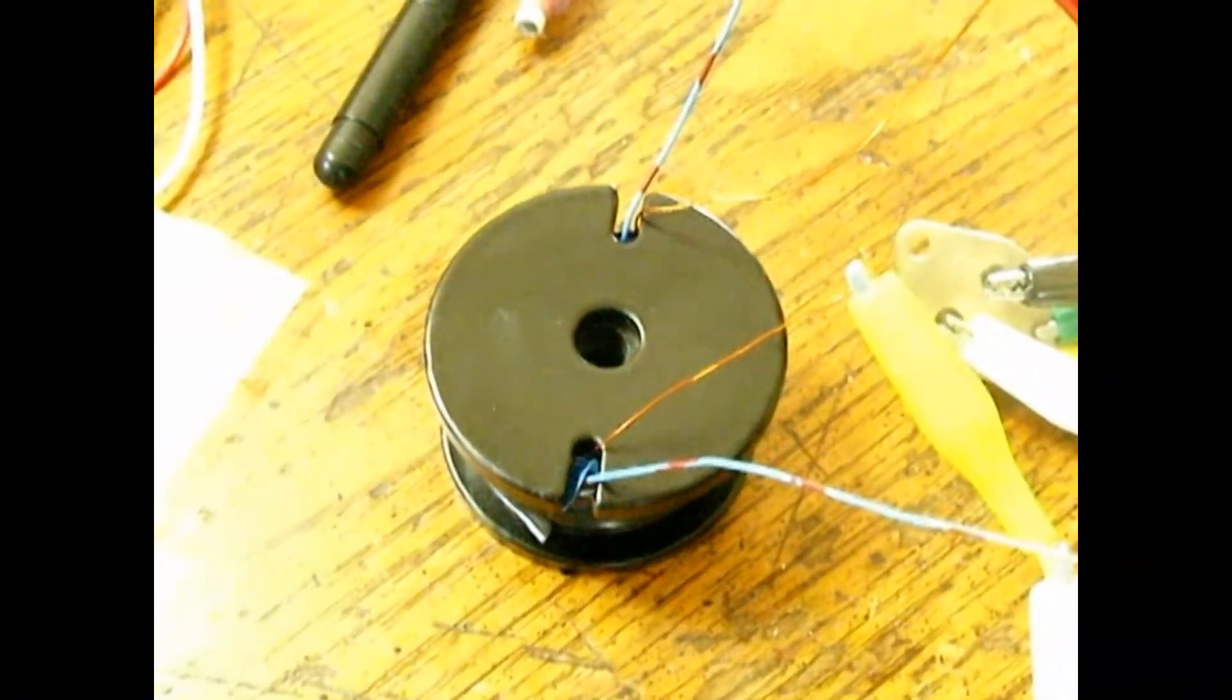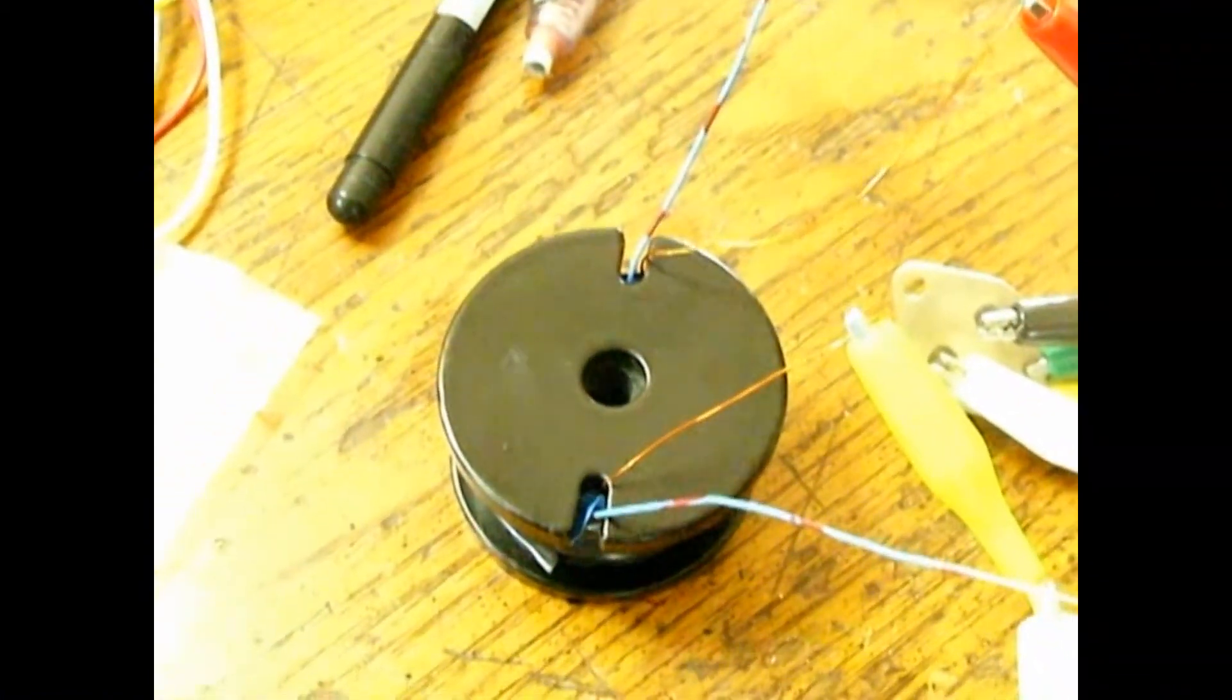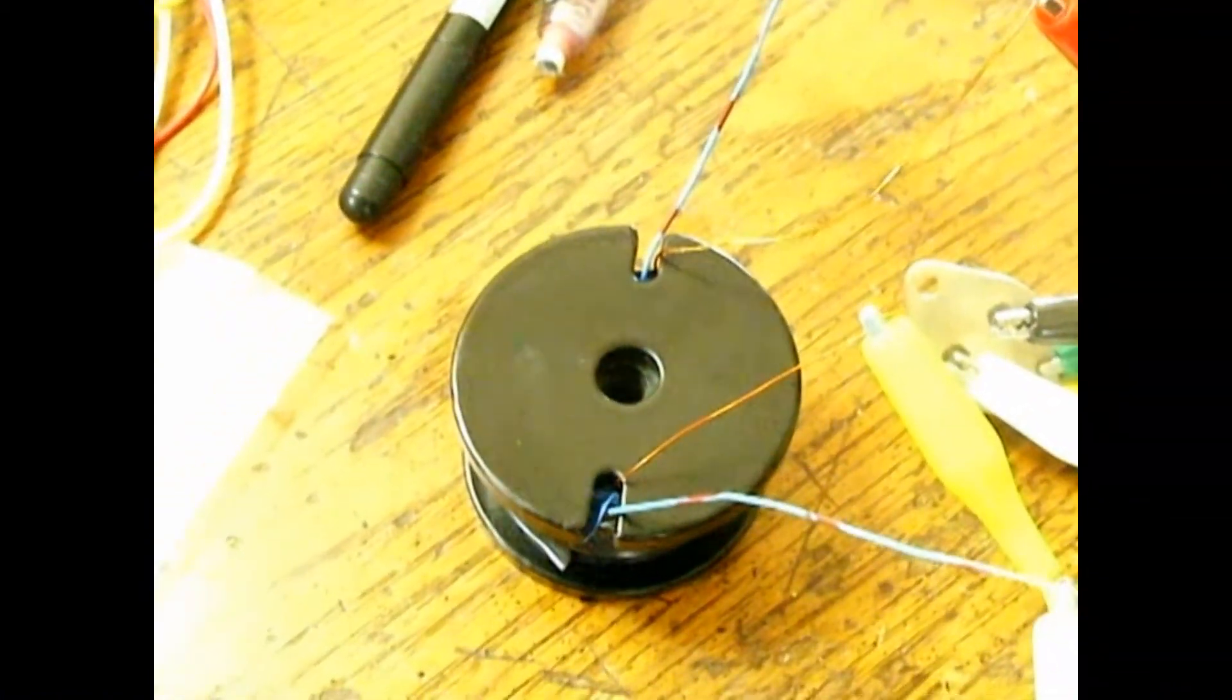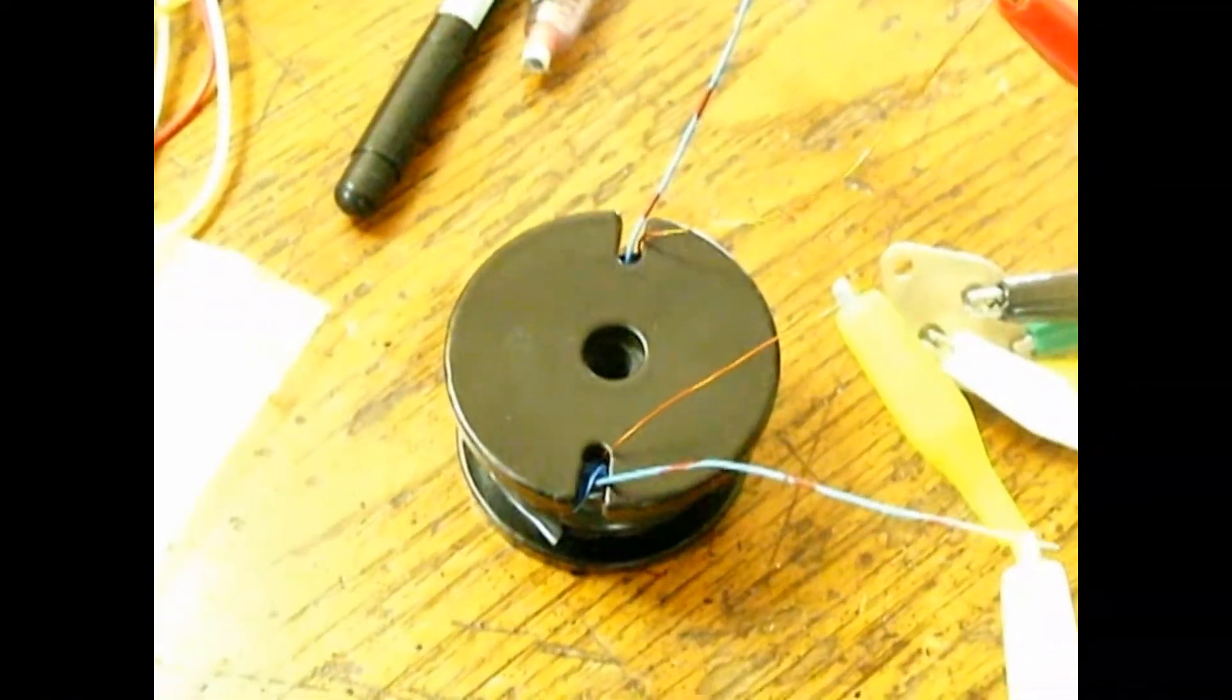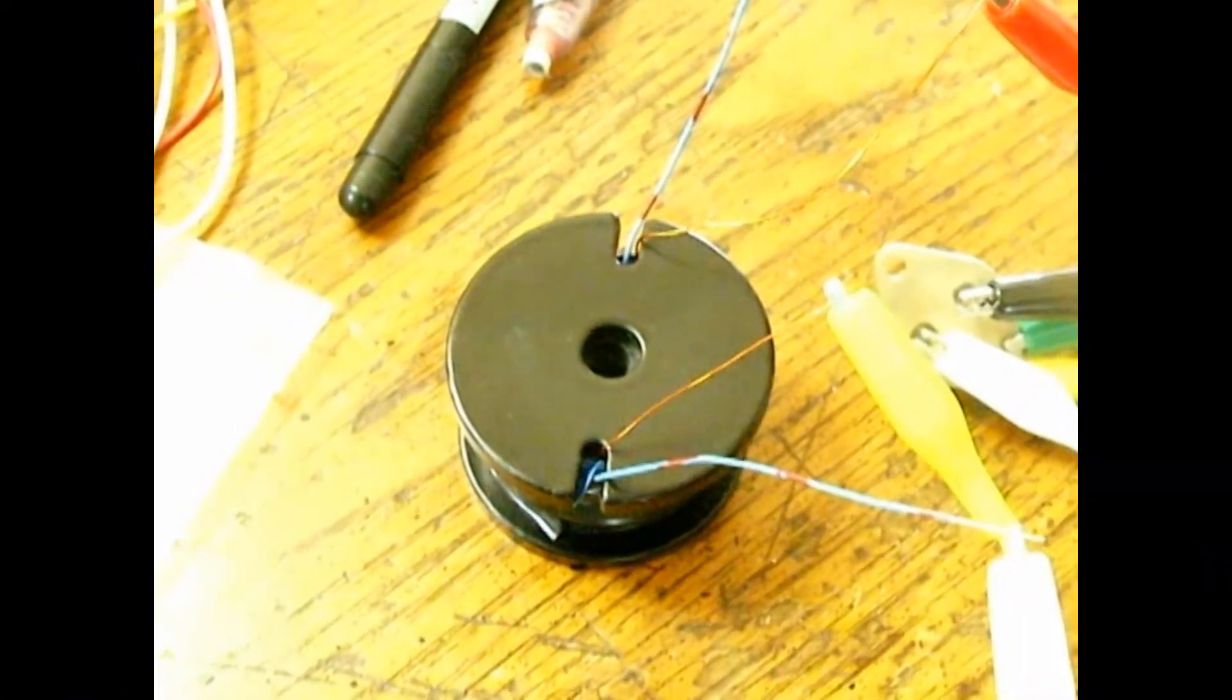Then I added 24 gauge copper wire, 120 turns, and as you can see, it's lighting that utility bulb and it's bright.